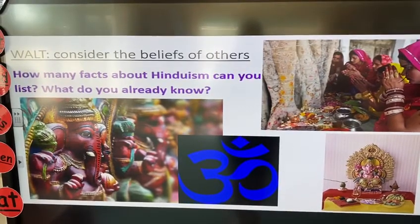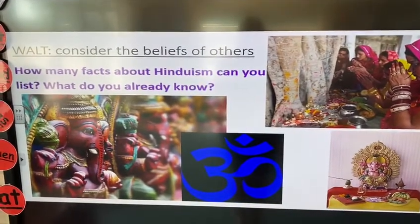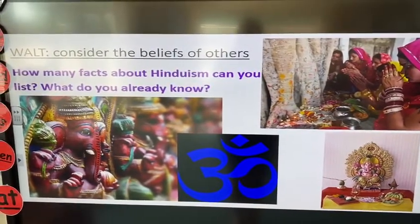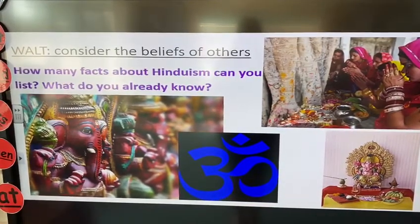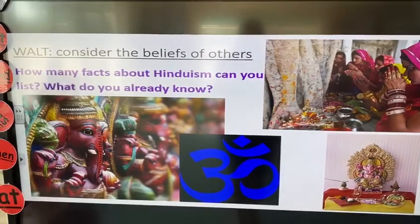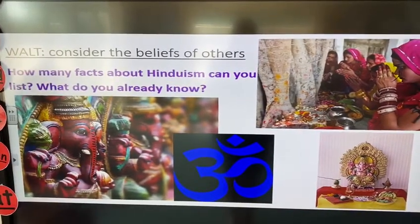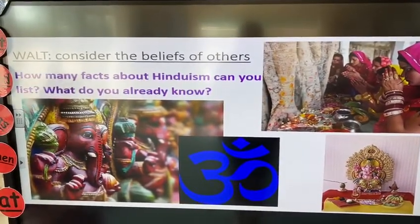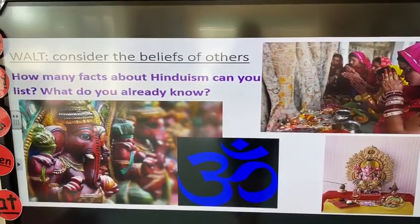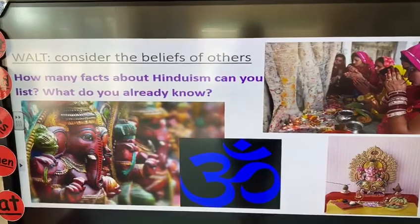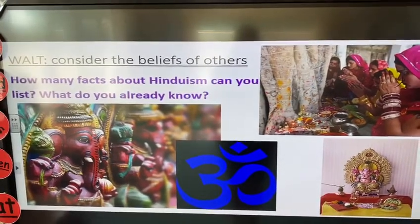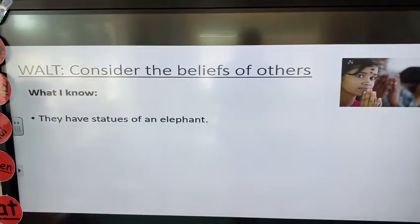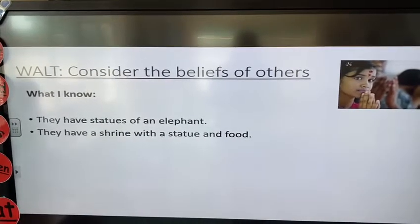The first thing on the knowledge harvest is we need to think about what we already know about the Hindu religion, and these pictures might help you. You can see the elephant is featured a lot in the Hindu religion, so the elephant is obviously very important. I can see a picture of a shrine in the bottom corner where they've got food and incense — the shrine is where they go to pray, so that's very important to them. You may know what the symbol in the middle represents, what it says and what it means. So these might help you decide what you already know. You're going to write the heading 'What I Know' and then write some bullet points about anything you already know about the Hindu religion.